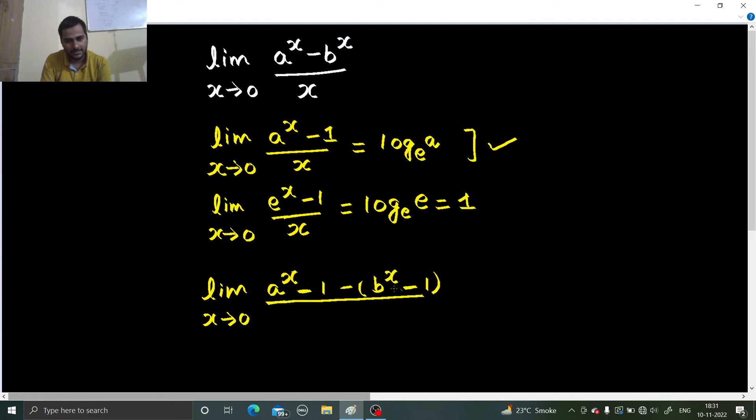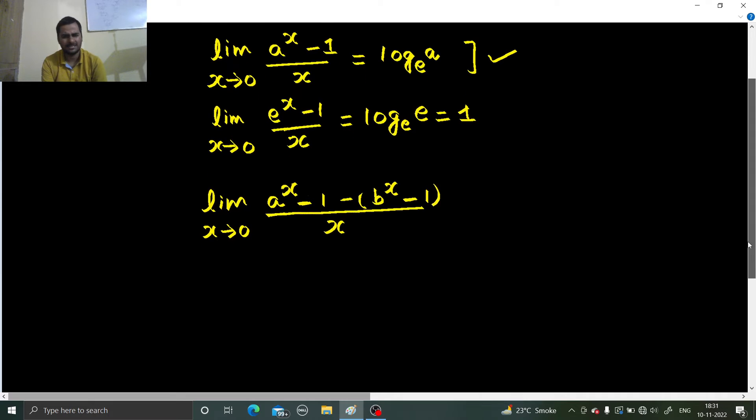So this divided by x. Fine, so that's it, things are done. Limit x tending to 0. A power x, I am separating the limits. A power x minus 1 divided by x, minus sign, limit x tending to 0, b power x minus 1 divided by x.